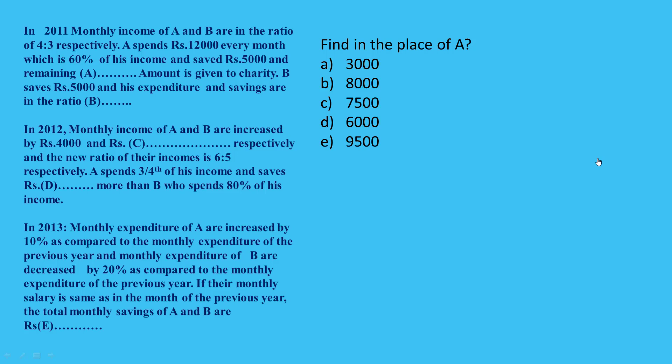We will answer each question, and one question should be interlinked with another. So basically we will approach the answers. If we come in 2011, we will come in options A, B, C. Let's see how we approach this.